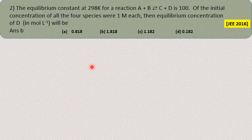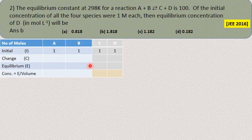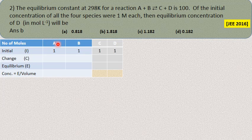Apply the ICE method. Let x be the degree of dissociation. Initial concentration is 1 for all species. For reactants A and B: x moles of A combine with x moles of B (since coefficients are all 1). So x moles of A and x moles of B are converted, giving x moles of C and x moles of D as products.